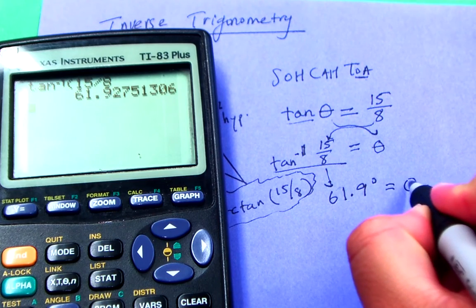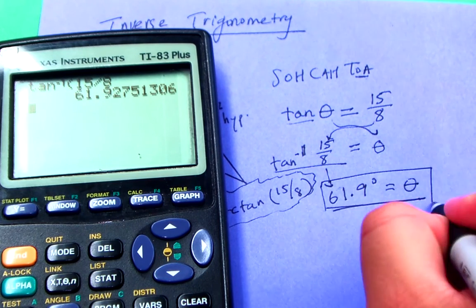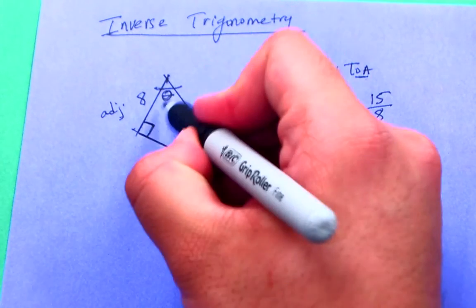And as expected, that's an angle measure, and so is theta. And there you go. That angle was 61.9 degrees.